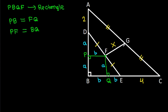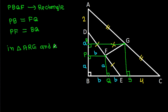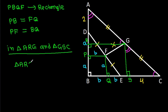From point G, if we draw a perpendicular on BC and a perpendicular on AB, suppose this point is R and this point is S. Then in triangle ARG and triangle GSC, these two angles will be equal and AG is equal to CG, so triangle ARG will be congruent to triangle GSC.